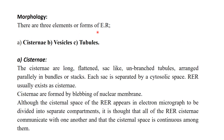There are three elements or forms of endoplasmic reticulum: cisternae, vesicles, and tubules. The cisternae are long, flattened, sac-like, unbranched tubules arranged parallel in bundles or stacks near the nuclear membrane. Each sac is separated by cytosolic space. Rough endoplasmic reticulum usually exists as cisternae because it is close to the nuclear membrane and has ribosomes embedded on it — that is why it is called rough endoplasmic reticulum.